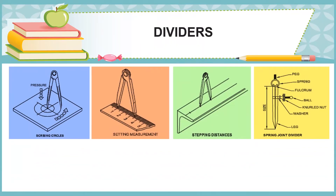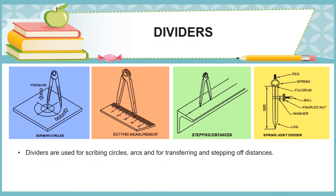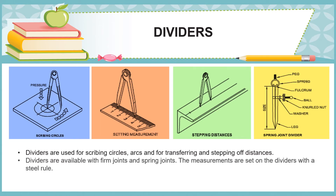Dividers are used for scribing circles, arcs, and for transferring and stepping off distances. They are available with firm joints and spring joints. The measurements are set on the dividers with a steel rule. The sizes of dividers range between 50 mm to 200 mm.